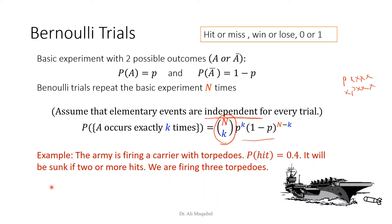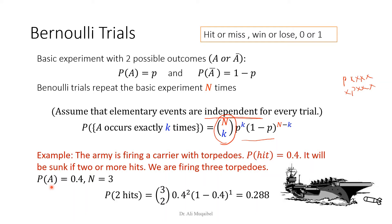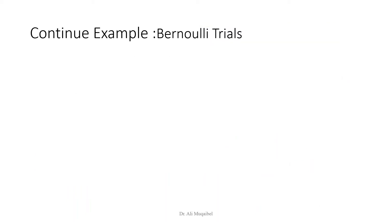The probability of a hit, small P, is 0.4. Since the question asks for two or more hits, k could be two or three. Let's first find the probability of exactly two hits. Using the formula: 3 choose 2, times 0.4 squared, times (1 minus 0.4) to the power one — two hits and one miss — that gives 0.288. We also need the probability of exactly three hits. You can pause the video and try to calculate this before we show the result.